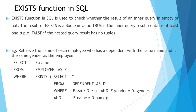So EXISTS function works along with a nested query to check whether the result of the inner query exists or not. The conditions must be given in the inner query. If the condition is satisfied and such a tuple exists, then the result of the inner query is passed to the outer query.